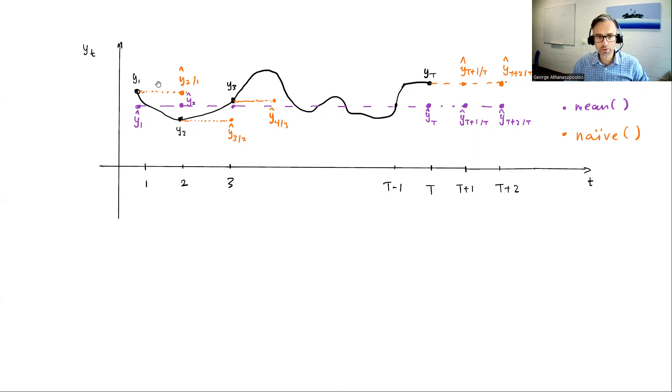My second step ahead forecast is the last observation, and so on. In sample, the first fitted value I can get is for the second value I see, y_2. And ŷ_2|1, conditional on y_1, is equal to y_1 itself. ŷ_3|2 is y_2. Hence, these now are actual forecasts. I don't see anything about the future. I don't use the future to estimate anything. All I'm using exactly is information up to that point.